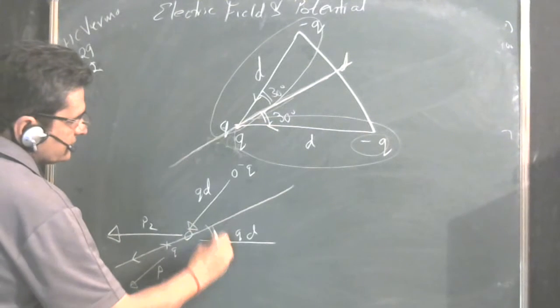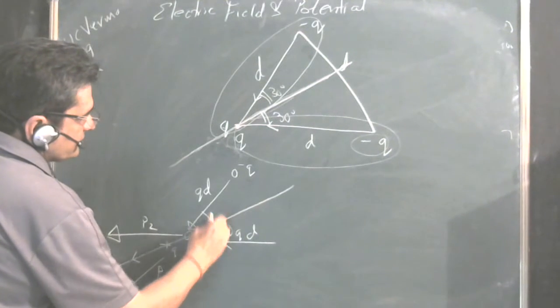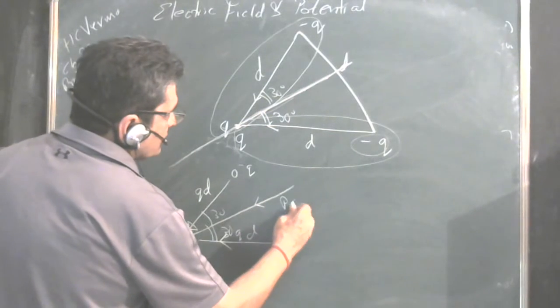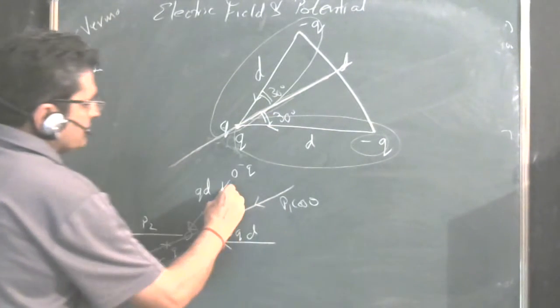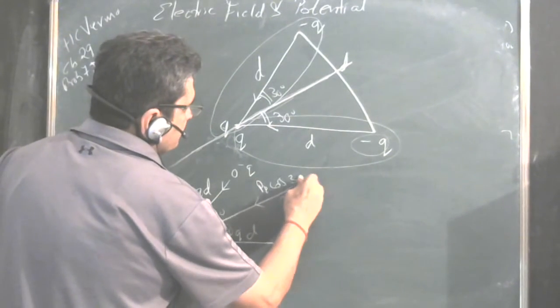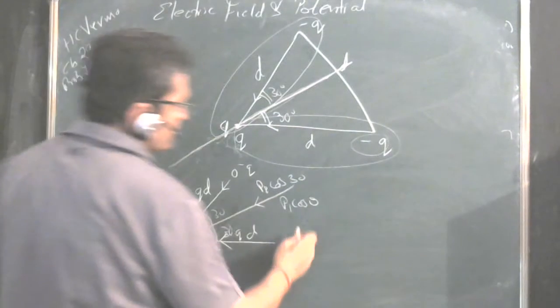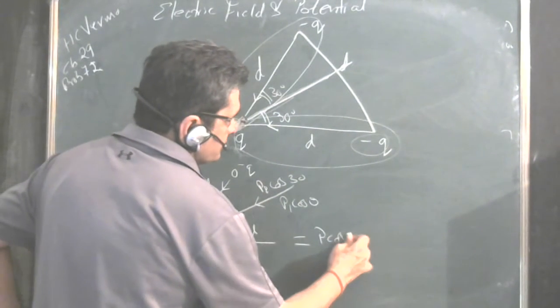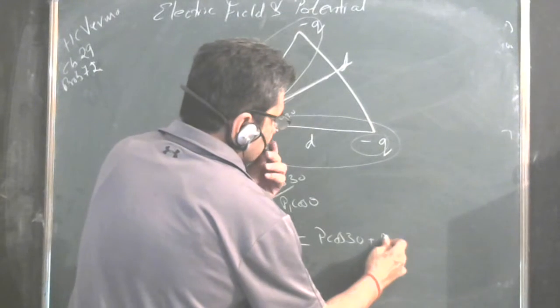So this will be P1 cos 30 and because of this again P2 cos 30. P1 cos 30, P1 and P2 are same, we can write P, so it is P cos 30 plus P cos 30. These are the two dipole moments.